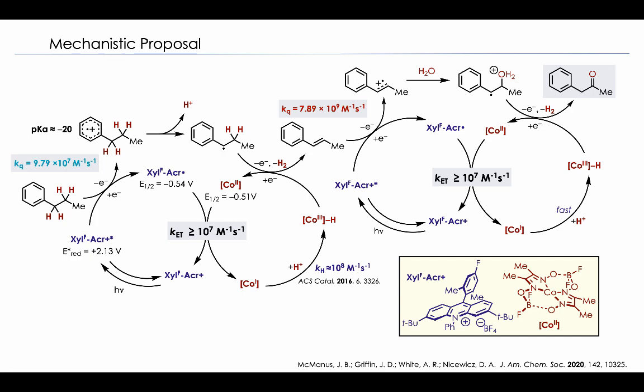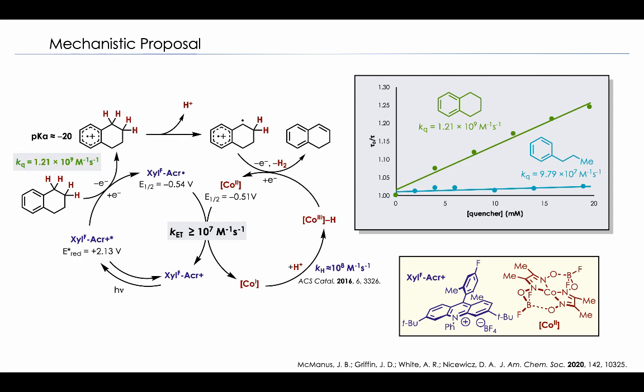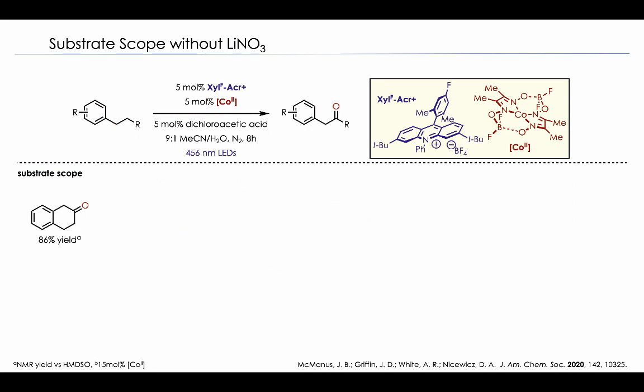However, if it turns out we switch to a more electron rich aromatic species such as tetraline rather than propyl benzene, this now quenches the excited state acridinium on the order of 10 to 9 per molar per second, similar to that of lithium nitrate or the styrene intermediate. So now if we replace this propyl benzene substrate with tetraline, we now can expect that this type of electron transfer event will occur more readily and that it could participate in downstream reaction without the addition of lithium nitrate. And so this actually turns out to be true. So we were able to form the two tetralone in 86 percent yield without utilizing lithium nitrate. And we're actually able to run this with only five mole percent of the cobalt oxine rather than 10 mole percent. And for only eight hours compared to 20 hours.